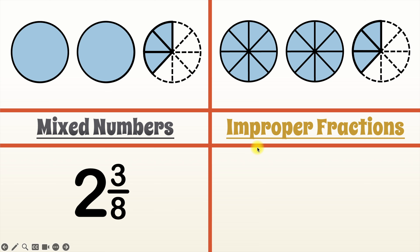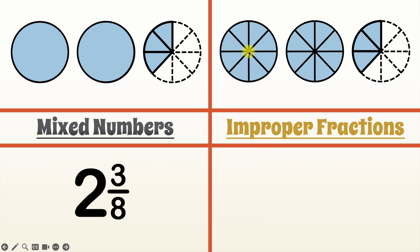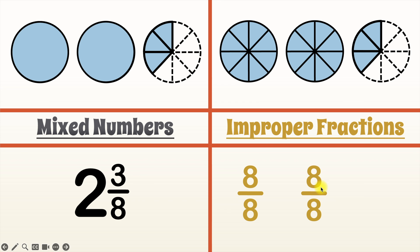Now let's talk about the improper fraction. With improper fractions, we don't use whole numbers at all — we only use fractions. This first circle is cut up into eight pieces, and all eight of them are filled, so we show it using the fraction eight over eight. The second circle is exactly the same — all eight pieces are filled — so we show that circle using eight over eight as well.